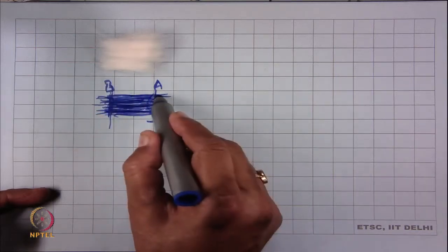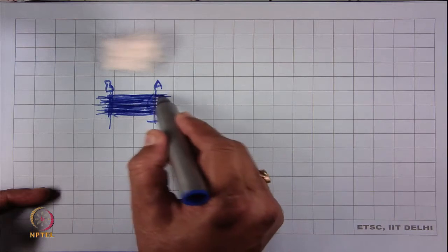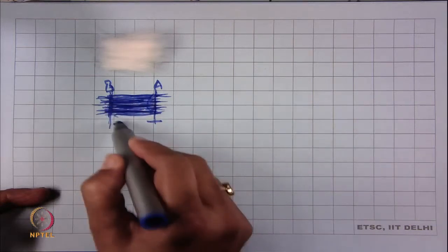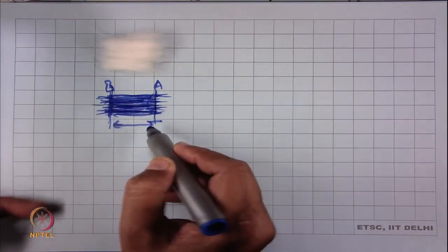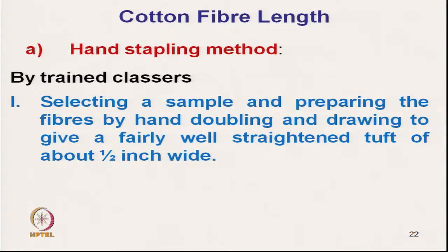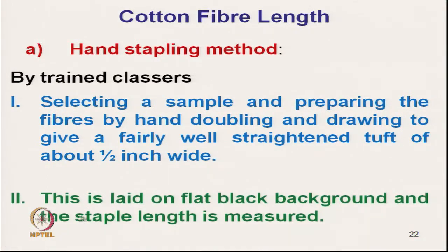At the point where density suddenly changes, we can draw a rough line on either side. The distance AB is called the staple length, and the width of the fringe is approximately half an inch. The strand is laid on a flat black background so the white fibres are clearly visible against it, and the staple length is measured.